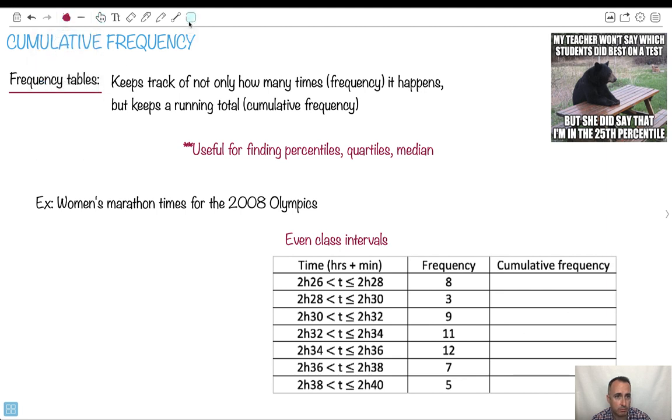First of all, these are really important. You can use these tables, but also these graphs to figure out percentiles, quartiles, and median. Here's an example: the women's marathon times for the 2008 Olympics. Now, the IB says that we're supposed to be using even class intervals in order to do this. I think I've got an example below that has one of them that's uneven just to play around with that, but they're usually going to be even.